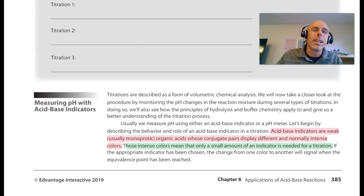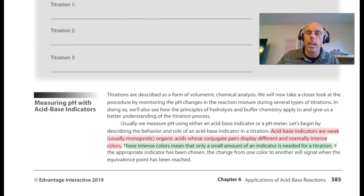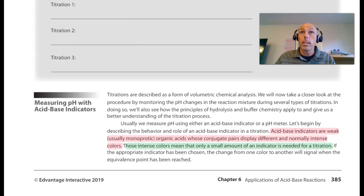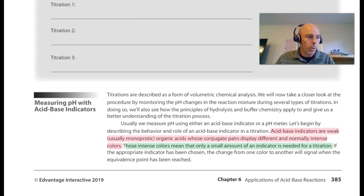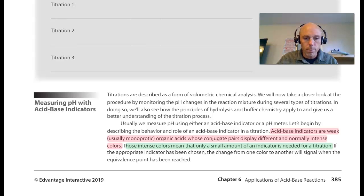You saw me use phenolphthalein in the acid base titration I did at the beginning of the rate law lab, where it started colorless. It's colorless in the presence of an acid, and then once there was base in excess, it turned pink. So that was the point at which I knew I'd reached or come close to the equivalence point.